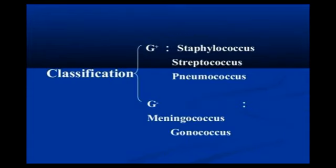Moving on, cocci or bacteria are classified into two groups: gram positive and gram negative. Under gram positive, the bacteria included are Staphylococcus, Streptococcus, and Pneumococcus. Under gram negative, there are Meningococcus and Gonococcus.